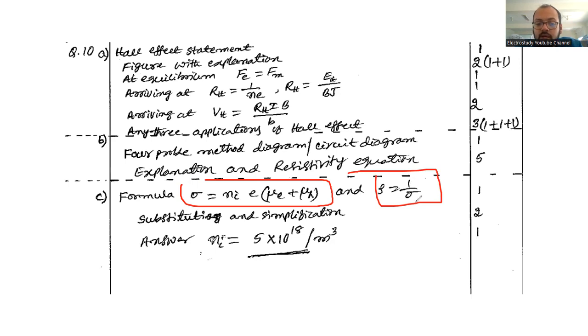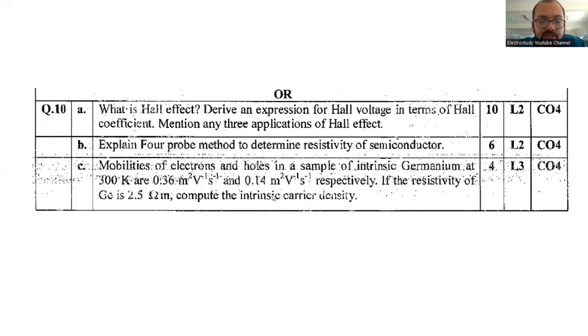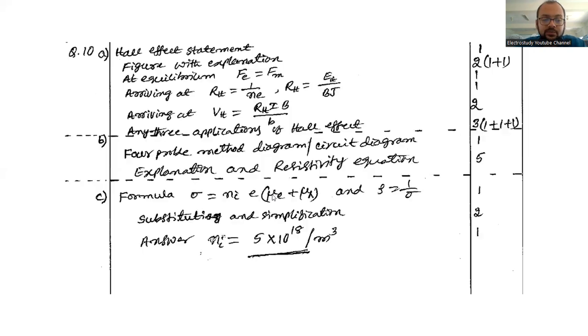Resistivity is inversely proportional to conductivity. Sigma is equal to 1 by rho or vice versa. So substitute and simplify, you should get n_i. n_i is equal to 5 into 10 to the power of 18. So this is the answer. Finally, work first and verify the answer. Likewise, you can expect for the university examination also in the coming university examination.